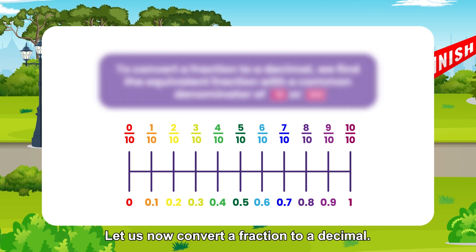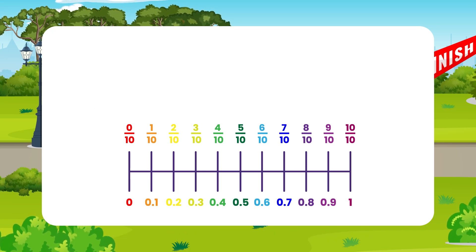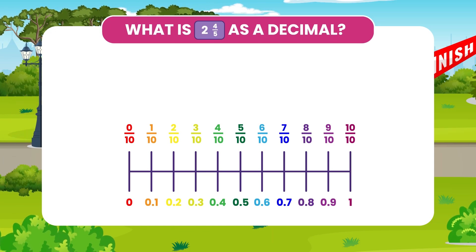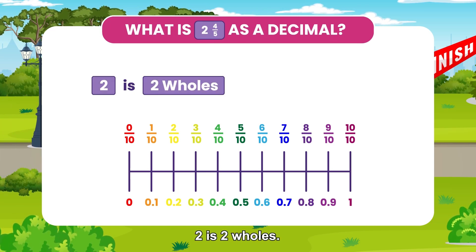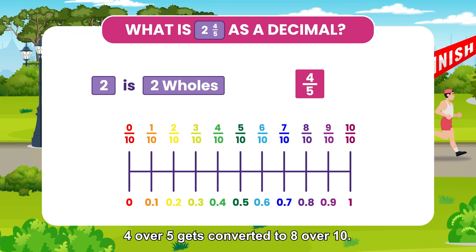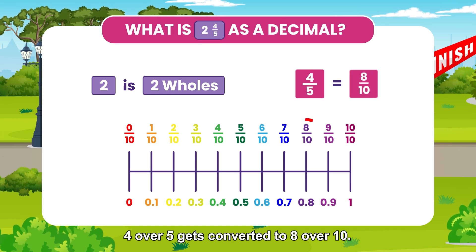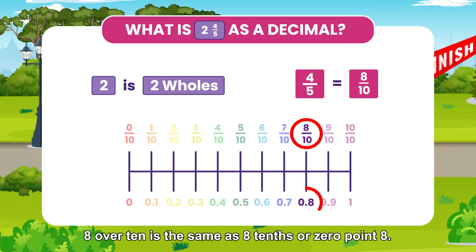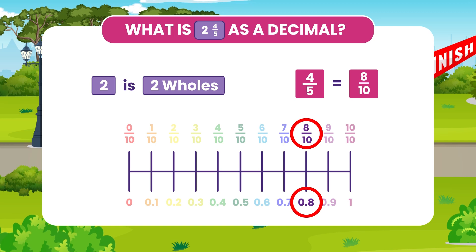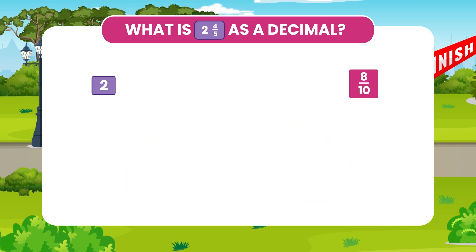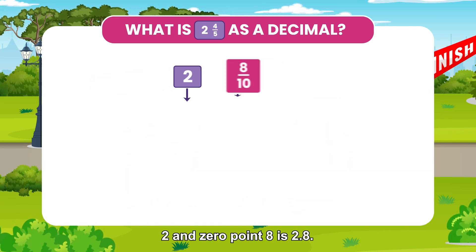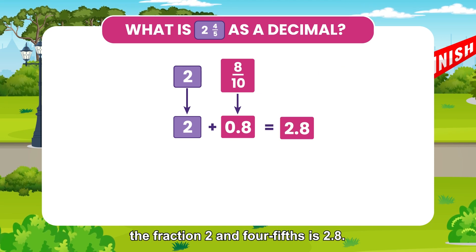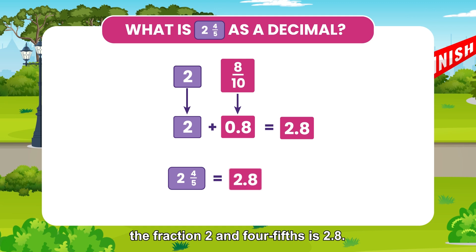Let us now convert a fraction to a decimal. What is 2 and 4 fifths as a decimal? 2 is 2 wholes. 4 over 5 gets converted to 8 over 10. 8 over 10 is the same as 8 tenths or 0.8. 2 and 0.8 is 2.8. Hence, the fraction 2 and 4 fifths is 2.8.